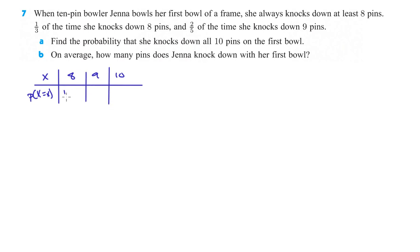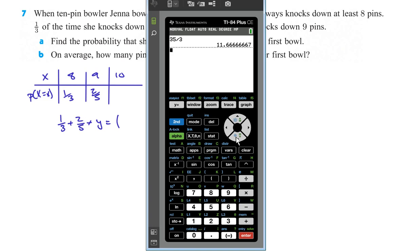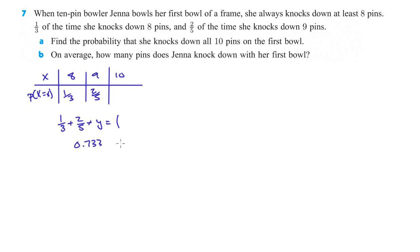We've got X and probability of X equals X. So she knocks down 8 pins with probability 1/3, and 9 pins with probability 2/5. We need to find the probability of 10 pins. We know that 1/3 plus 2/5 plus Y must equal 1. We can just do this on the calculator: 1 divided by 3 plus 2 divided by 5 equals 0.733.